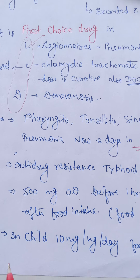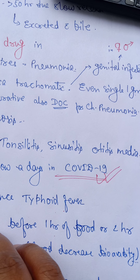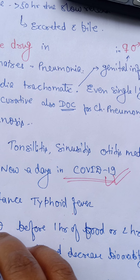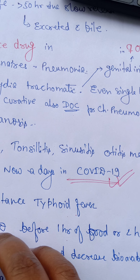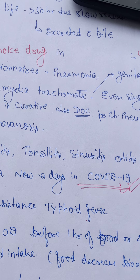In children, the dose of azithromycin is 10 mg per kg body weight per day for 3 days. Azithromycin is very effective and is used in the COVID-19 regimen. That is all about the macrolide antibiotic groups. Thank you very much.